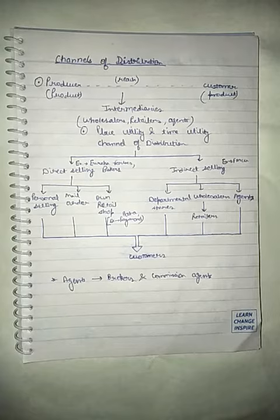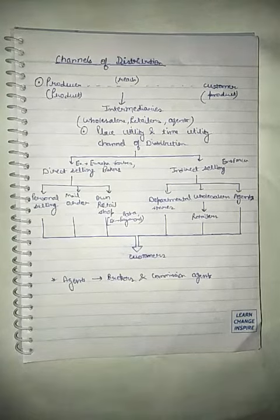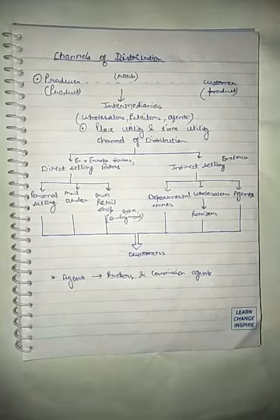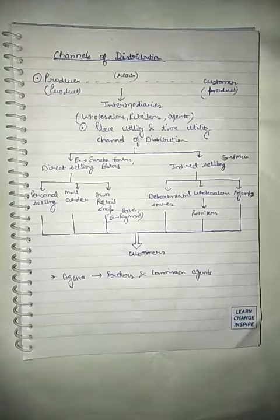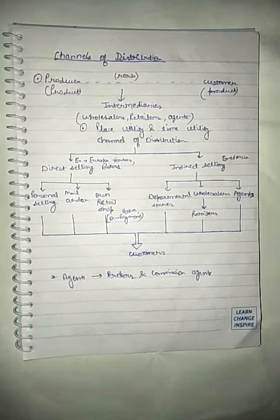it is creating the place utility. Also, it makes it possible for the consumer to get the goods when he wants them, and thus it is creating the time utility for the customers. Now, companies are using two